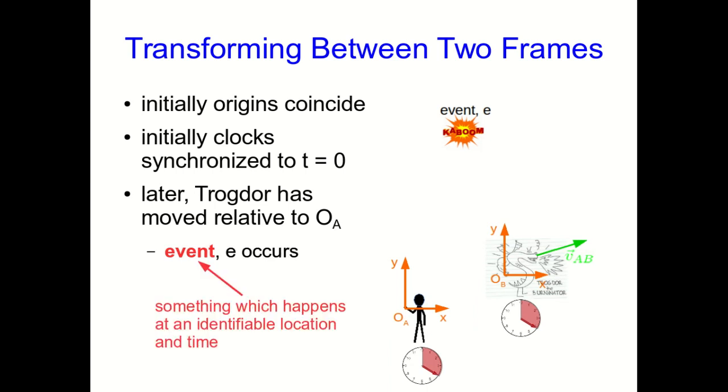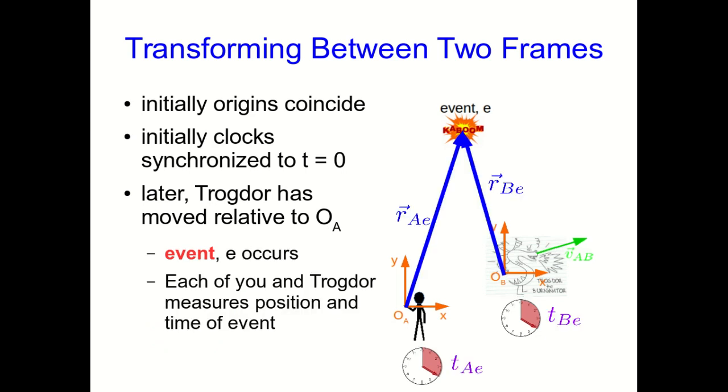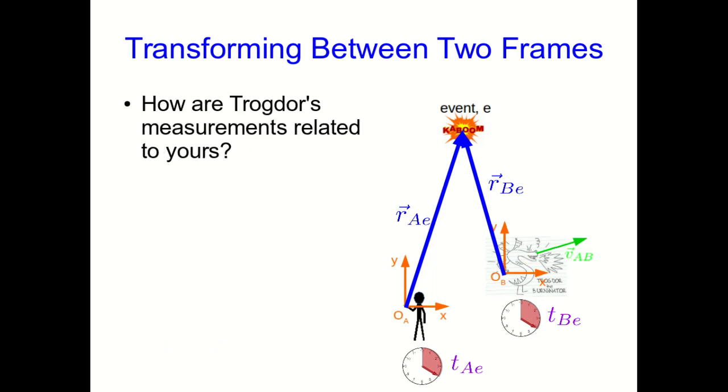What is an event? What do I mean? It's just anything which happens which has an identifiable location and time, so I've drawn it as something like a firecracker going off, but it could be anything where we can specify when it happened and where it happened. You and Trogdor can now make measurements of the position and time of that event, and what we're interested in is how Trogdor's measurements relate to yours.